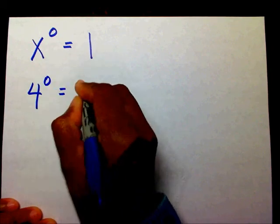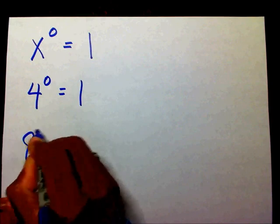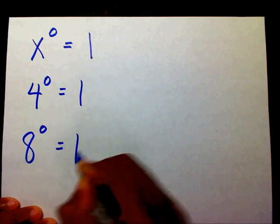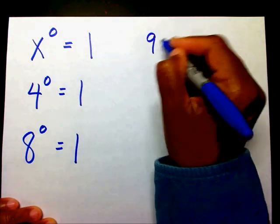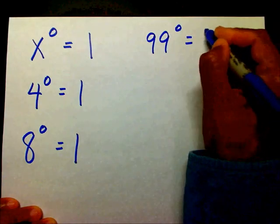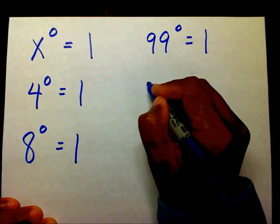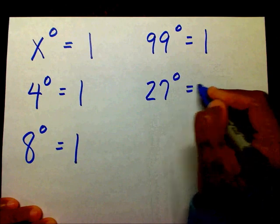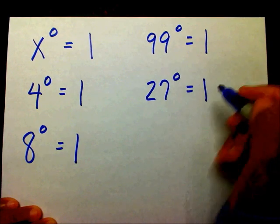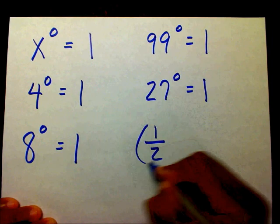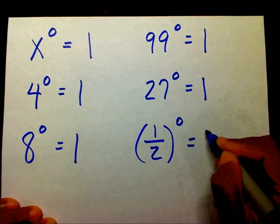four to the zero equals one, eight to the zero equals one, ninety-nine to the zero power equals one, twenty-seven to the zero power equals one, one-half to the zero power equals one.